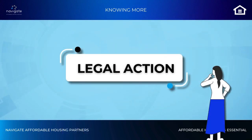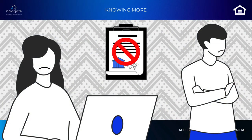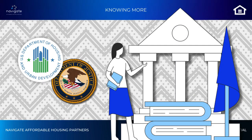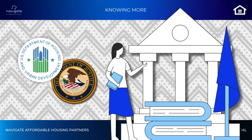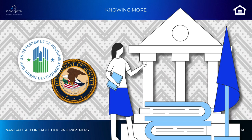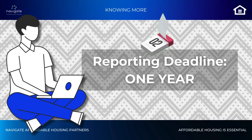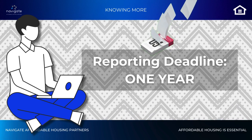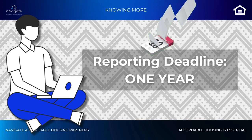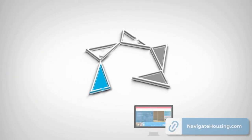Step 4: Legal Action. If the parties can't reach an agreement, HUD or the Department of Justice may take legal action to enforce your rights at no cost to you. You have one year from the last act of discrimination to file your complaint. For more information, visit our website at navigatehousing.com.